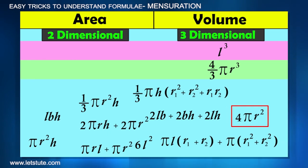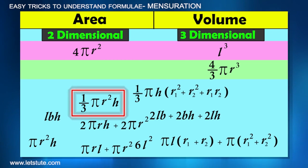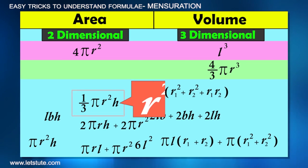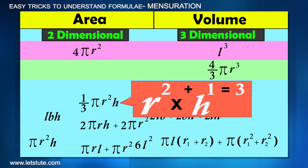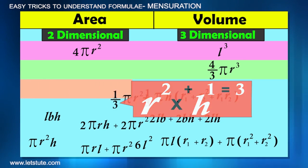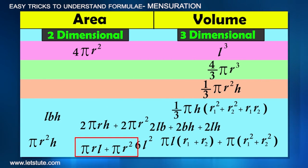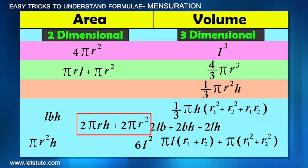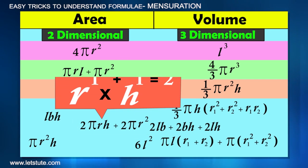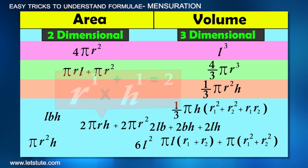4πr² is the formula to calculate area. Then 1/3πr²h: r² and h, so the addition comes up to 3. πrL is the formula to calculate surface area. Then 2πrh: r has power 1, h has power 1, it adds up to 2, and so on.